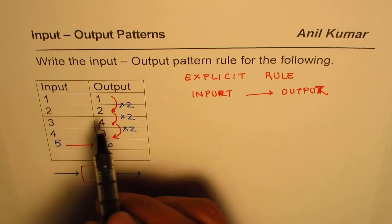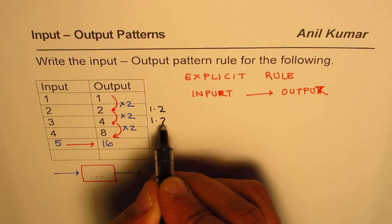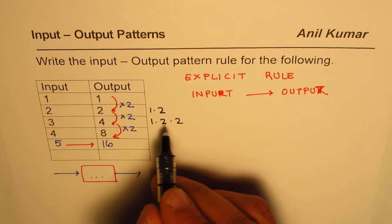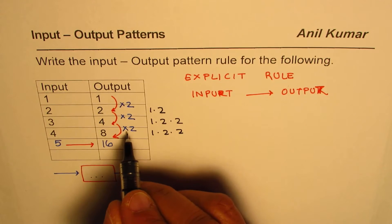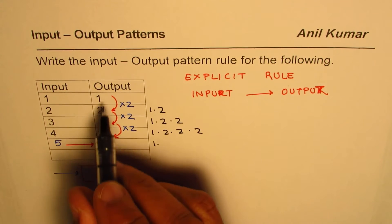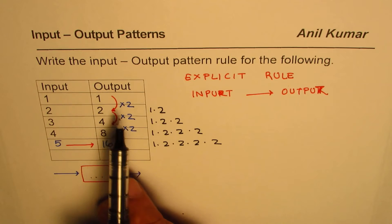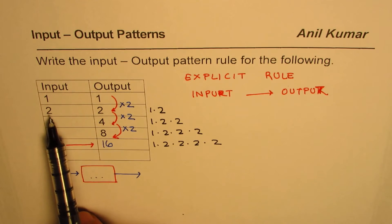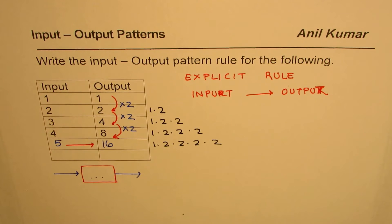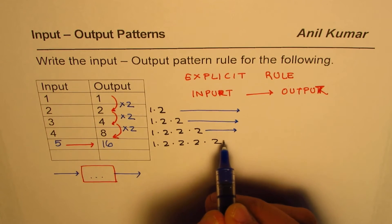The key here is that since we are multiplying each number by 2, we can say at this stage the number is 1 times 2, giving us 2. To get 4, it is 1 times 2 times 2. As for 8, it is 1 times 2 times 2 times 2. For 16, we start with 1 times 2 times 2 times 2 times 2. So if the input is 2, we multiply by one 2; if the input is 3, we multiply by two 2s.